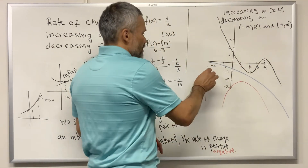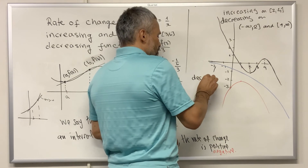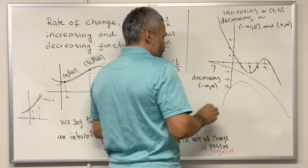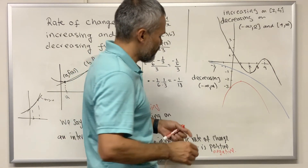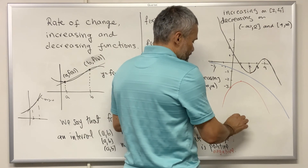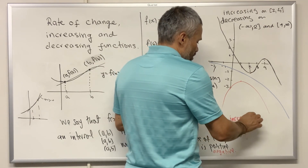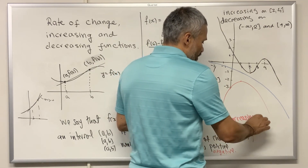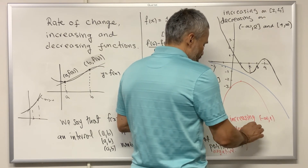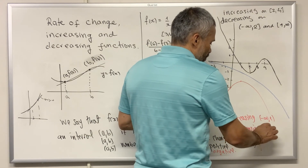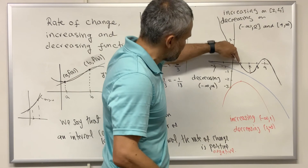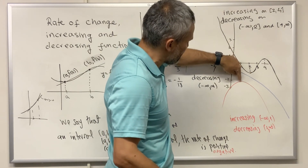For the blue function we can say that it is always decreasing, so we say decreasing on the interval negative infinity to infinity. For the red function, we can say that it is increasing on the interval negative infinity to one, and decreasing on the interval one to infinity. Note that in this case the number one is a maximum value for the function.